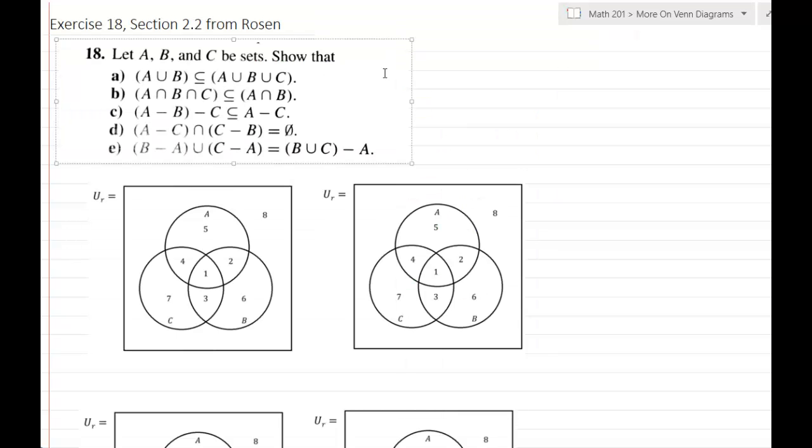So let's go ahead and get started with this exercise here, part A. If you notice we're dealing with two sets on the left-hand side and three on the right-hand side. We want the Venn diagram for each of these sets to be set up the same so that we can compare the Venn diagrams efficiently. We want to make sure to have them set up.